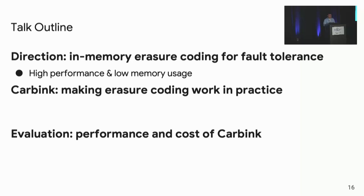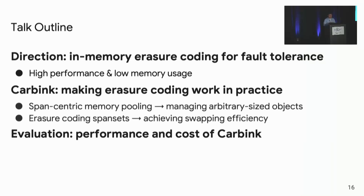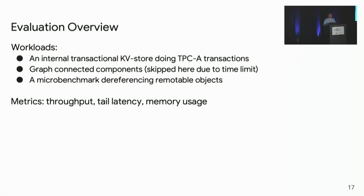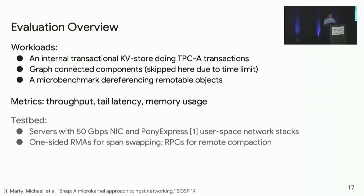That covers Carving's design, which adopts span-centric memory pooling to manage arbitrary-sized objects and applies erasure coding to span sets to achieve efficient swapping. Next, we evaluate the performance and cost of this design. We use three types of workloads covering in-memory database transactions, graph processing, and microbenchmarks studying system sensitivity. We evaluate on dimensions of throughput, tail latency, and remote memory usage. We use commodity servers with 50G NICs and Pony Express user-space network stack, which provides efficient one-sided RMAs for span swapping and RPCs for remote compaction.